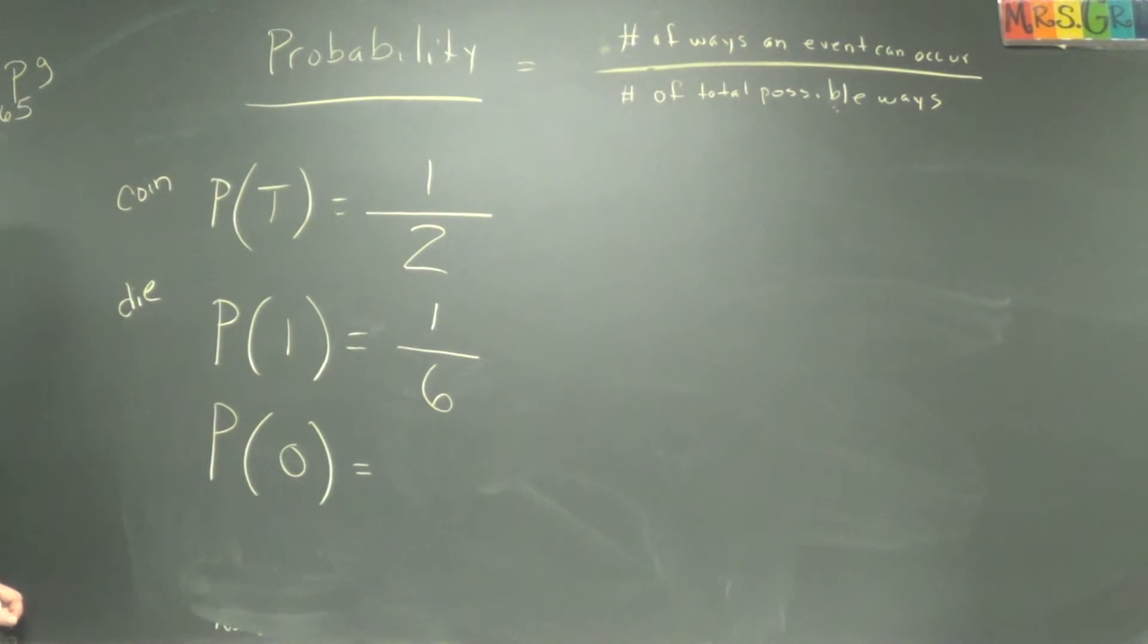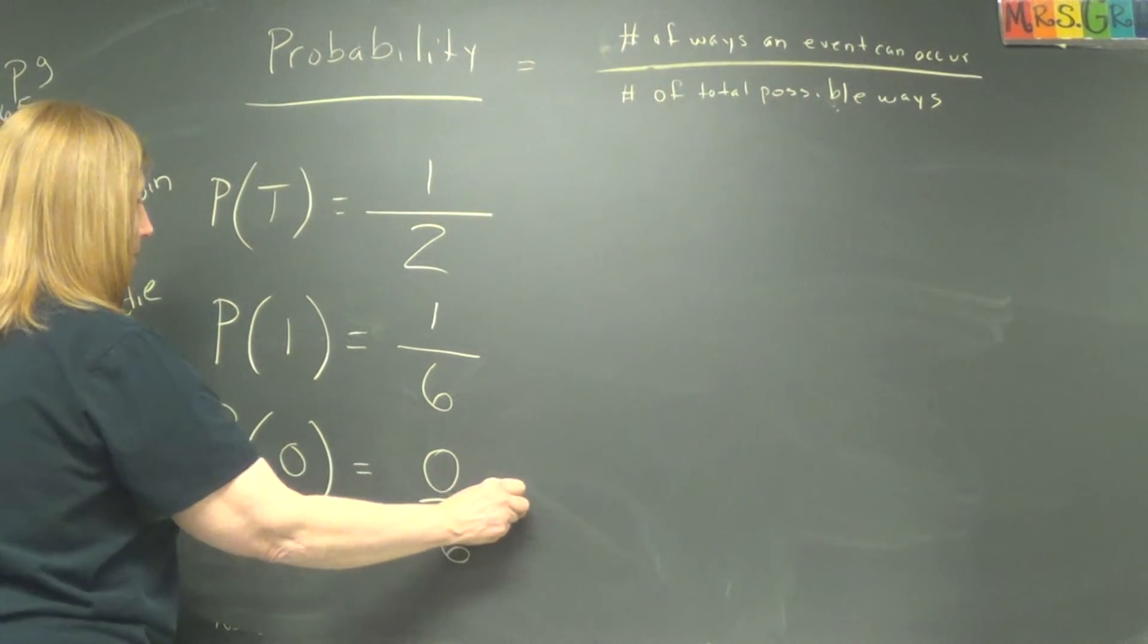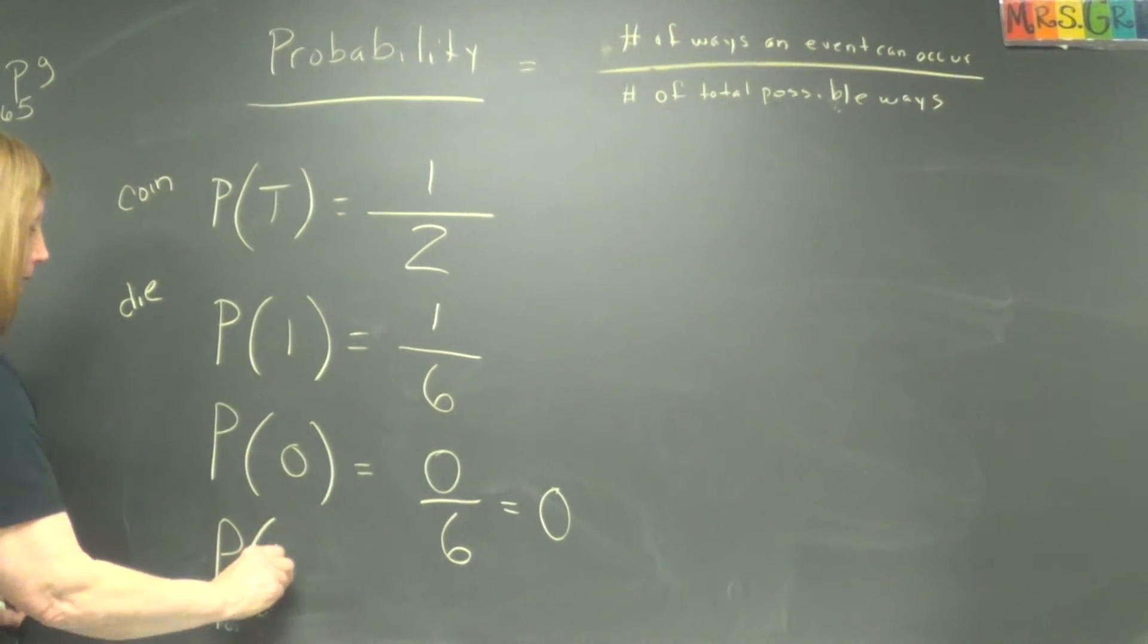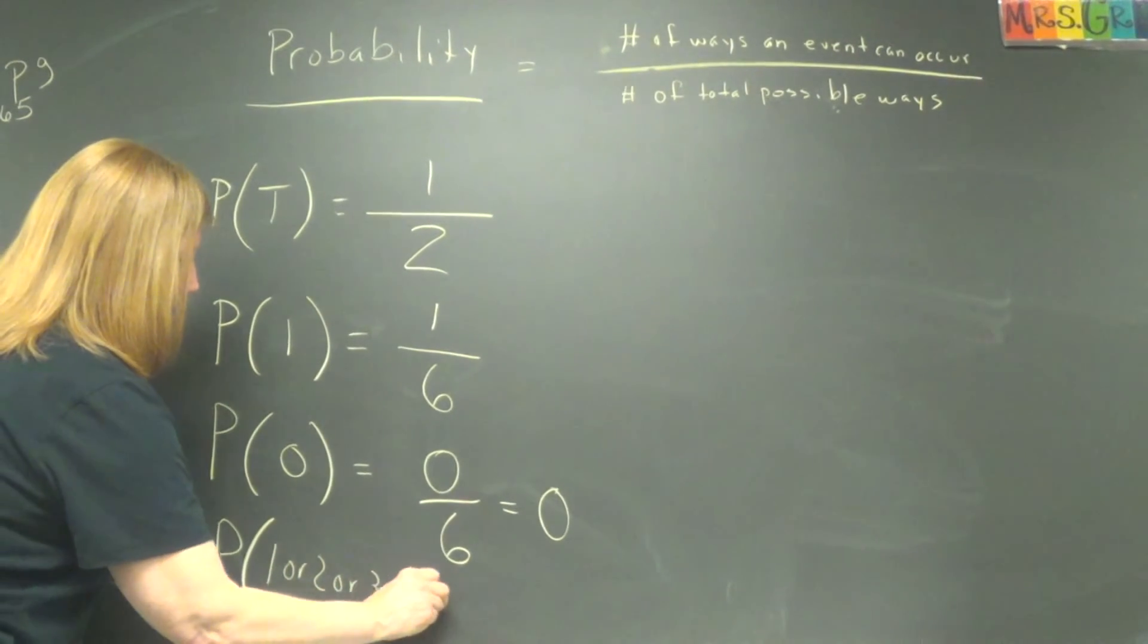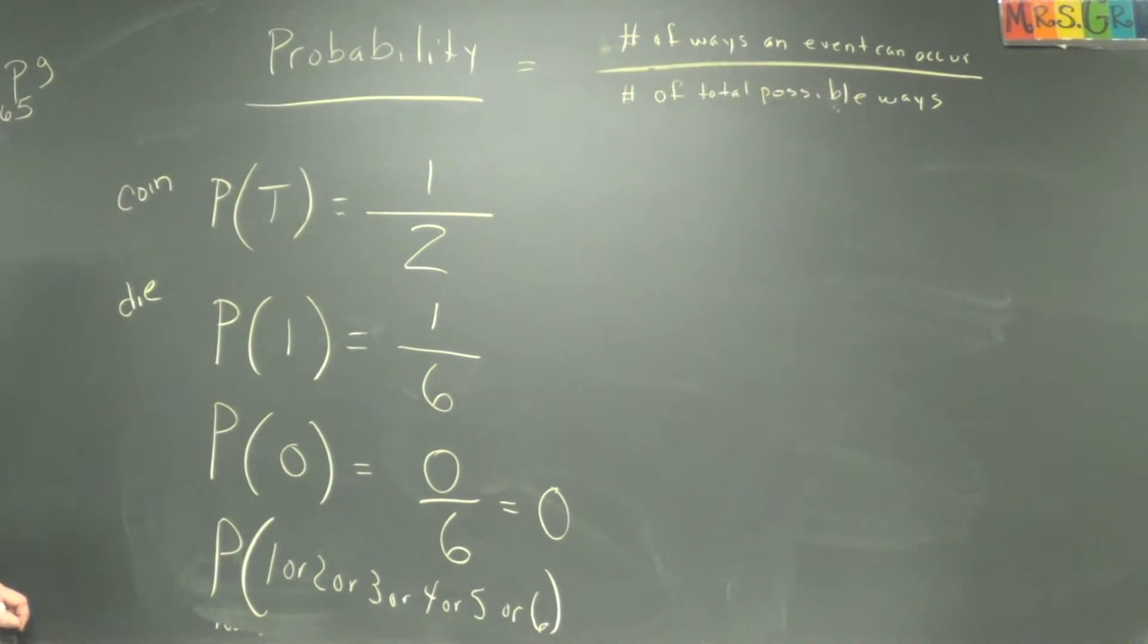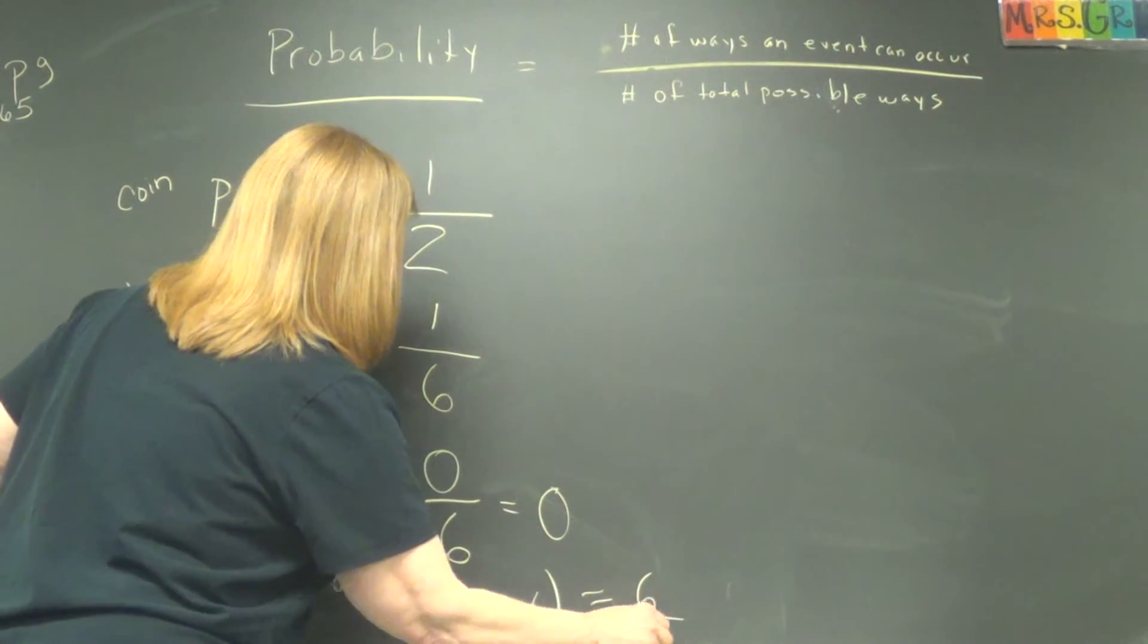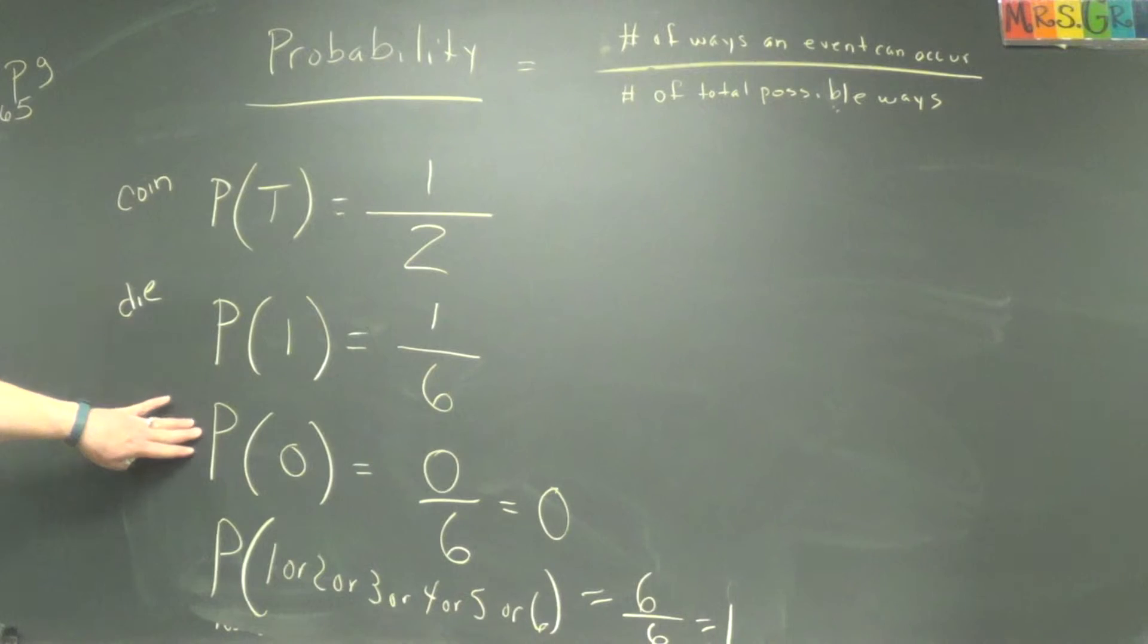So what's the probability of rolling a fair die and getting a zero? There is no way you can get a zero. So zero ways out of six total, which is zero. What's the probability of rolling a die and getting a one, or a two, or a three, or a four, or a five, or a six? Six over six? Six over six. Yeah. There's six ways to get that with the word or, so six over six is one.